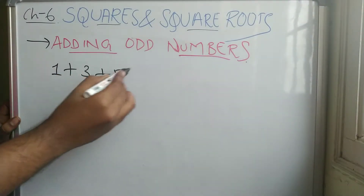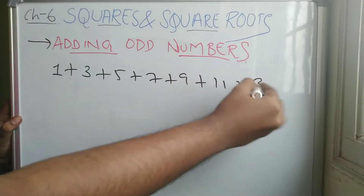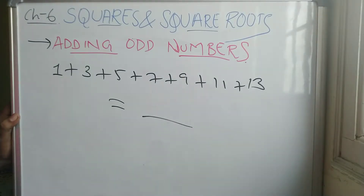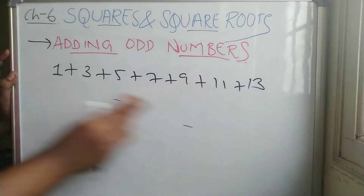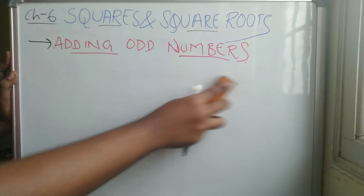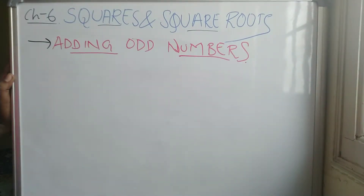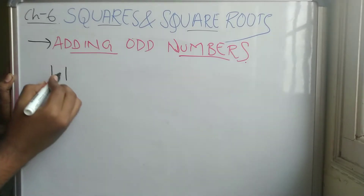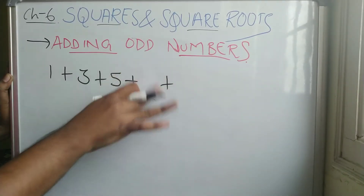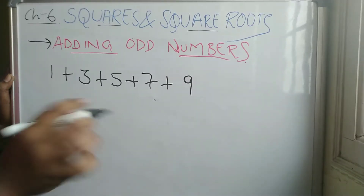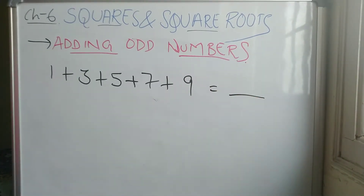So: one, three, five, seven, nine, eleven, thirteen. It's a little bit difficult, right? But there's a simple trick. Basically, we are adding consecutive odd numbers — next to next numbers. Let's see: the first number is one, then three, then five, then seven.